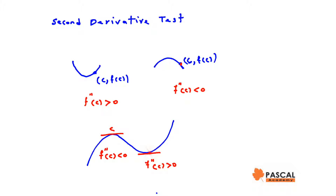Similarly, if f prime of c is 0 and f double prime of c is positive, meaning the function is concave up at c, then c and f of c is a local minimum of the graph of the function.